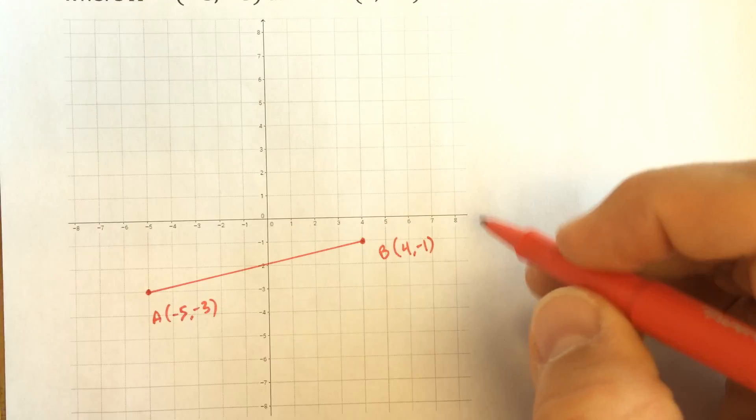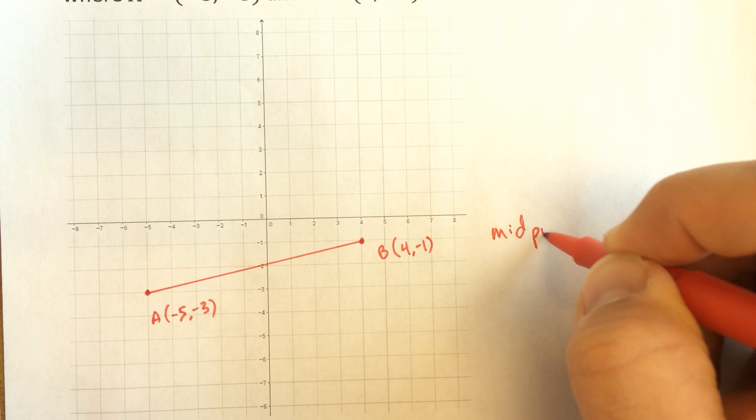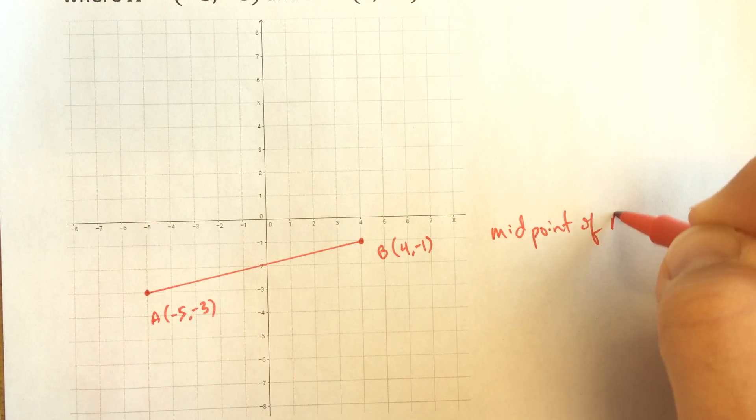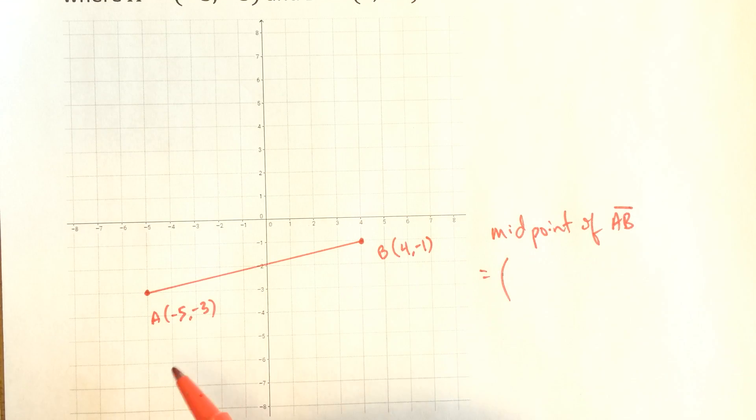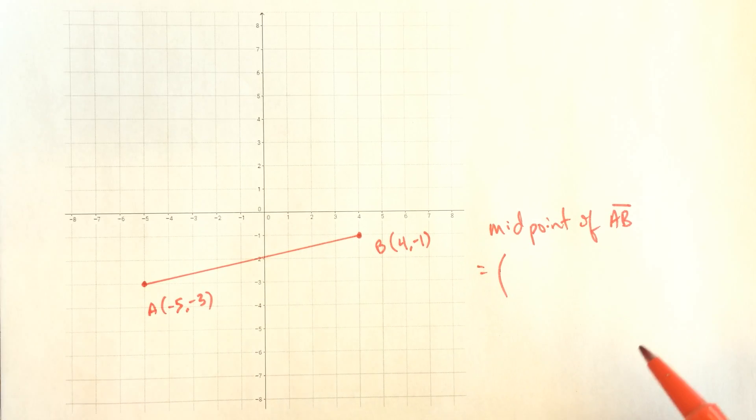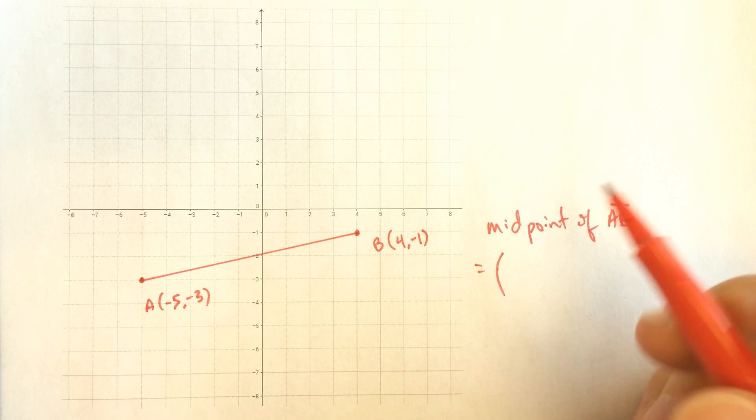To find the midpoint, we just take the average of the x values and the average of the y values, or the mean is the more technical term.